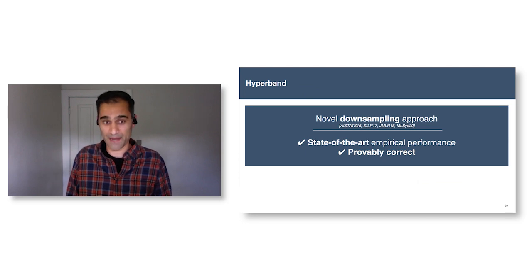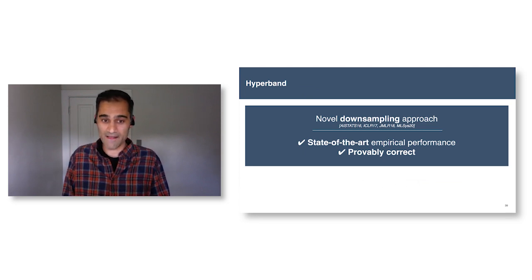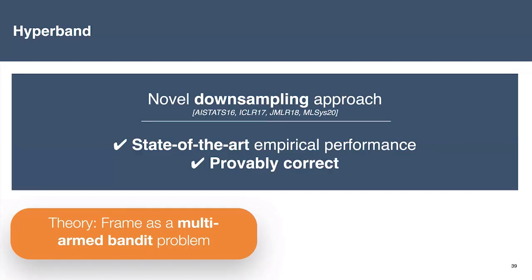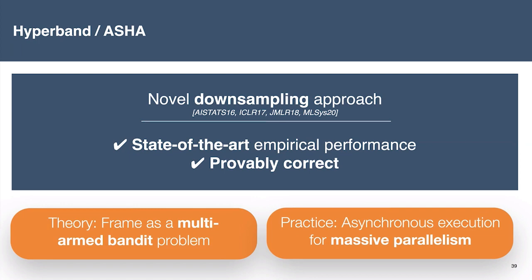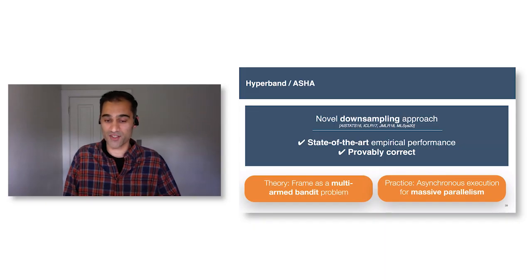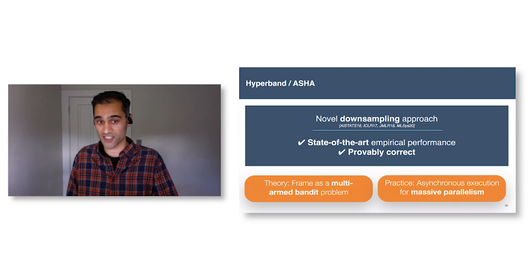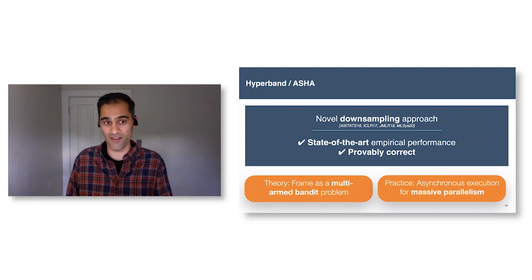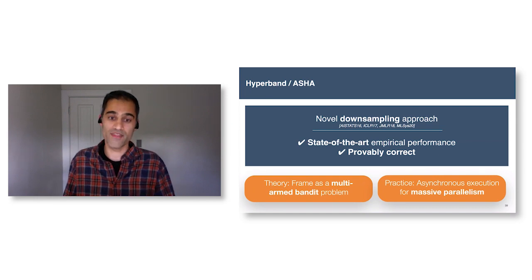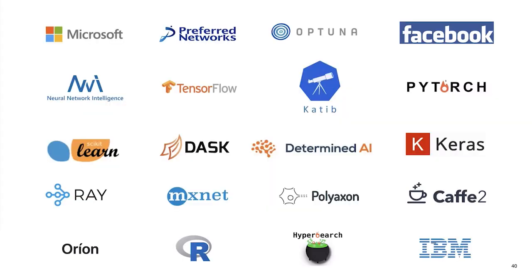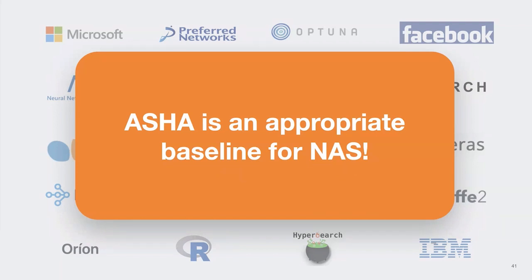In work my group has been pushing forward for the last half decade or so, we propose a novel down-sampling approach called Hyperband, which solves this safe early stopping problem—provably by framing it as a multi-armed bandit problem, and also empirically by achieving state-of-the-art performance on a wide range of benchmarks. We see up to two orders of magnitude speed-up and often higher-performing models when running Hyperband or ASHA relative to random search. ASHA is an asynchronous variant of Hyperband that allows this approach to run in massively parallel settings.